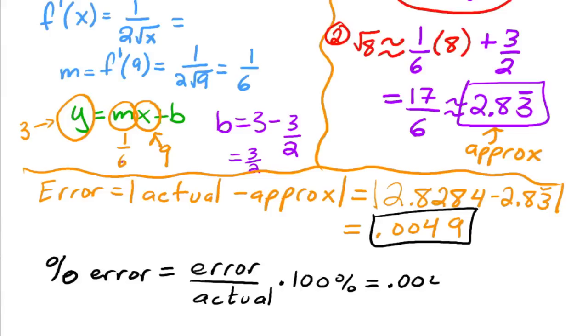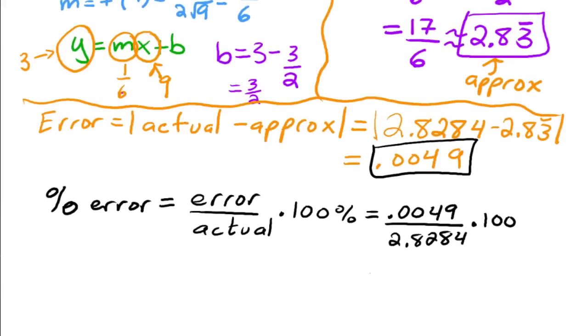Okay, so then I've got 0.0049 over the actual, which is 2.8284 times 100. And that is equal to, drumroll, please, 0.1735%. So, pretty close. And that's it.